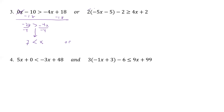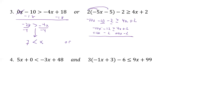Now this is 'or' again. So now we distribute. That's going to be minus 10x, then minus 10, then minus 2, greater than or equal to 4x plus 2. So we have common terms: negative 10x minus 12, greater than or equal to 4x plus 2. Now if we want positive x's, let's add 10x to both sides and subtract 2 from both sides. Those cancel. Minus 12 minus 2 is minus 14, greater than or equal to 14x. Now we divide both sides by 14. We have negative 1 greater than or equal to x.